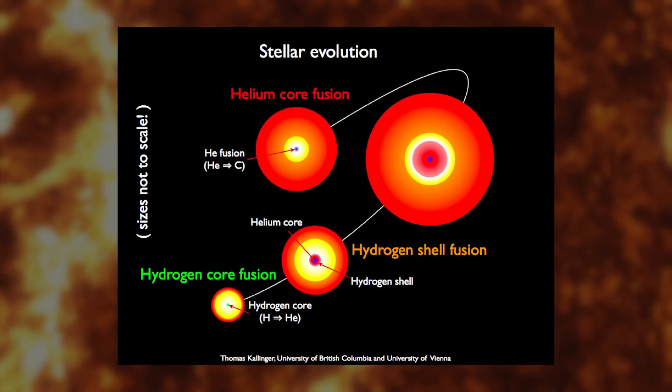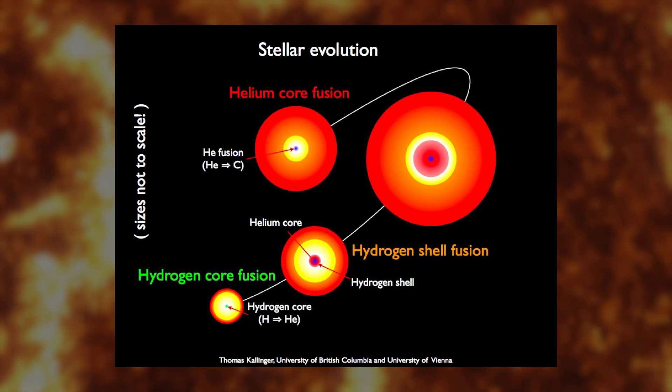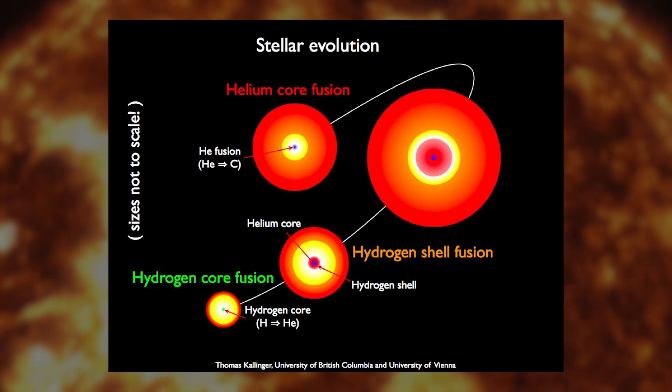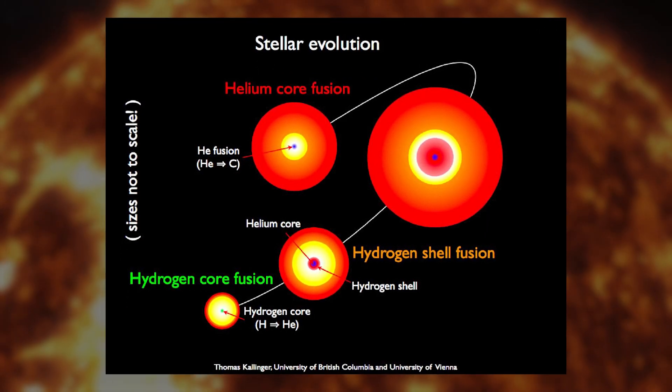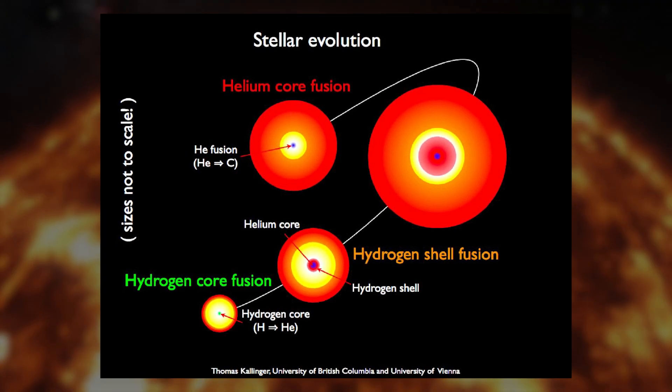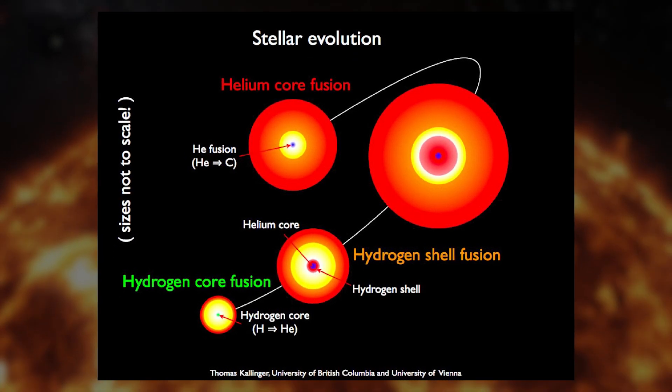Once all the helium in its core has been fused into carbon and oxygen, the star will contract once more. This will eventually create another shell fusion phase, this time as a helium shell outside the core becomes hot enough to fuse, further swelling the star's outer layers. And that's where the sun stops.